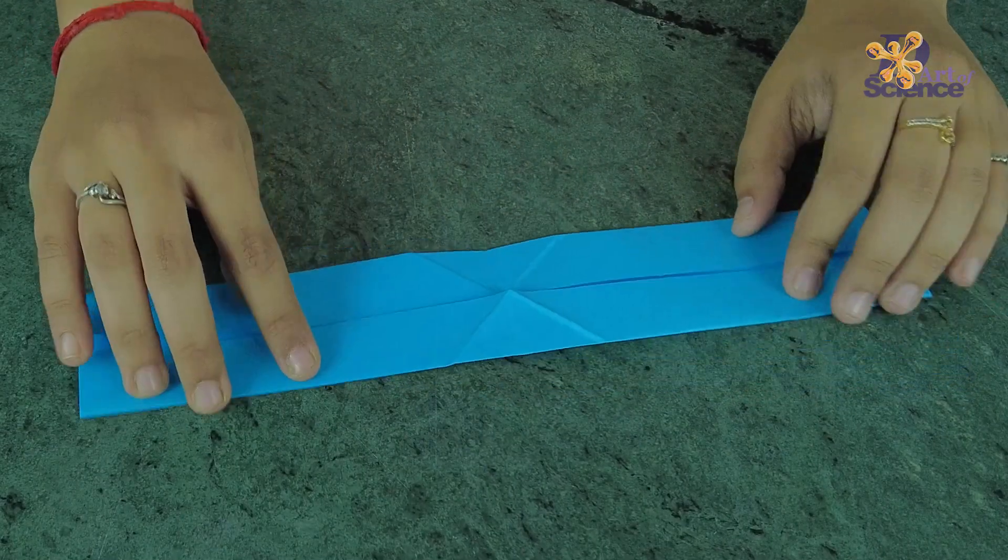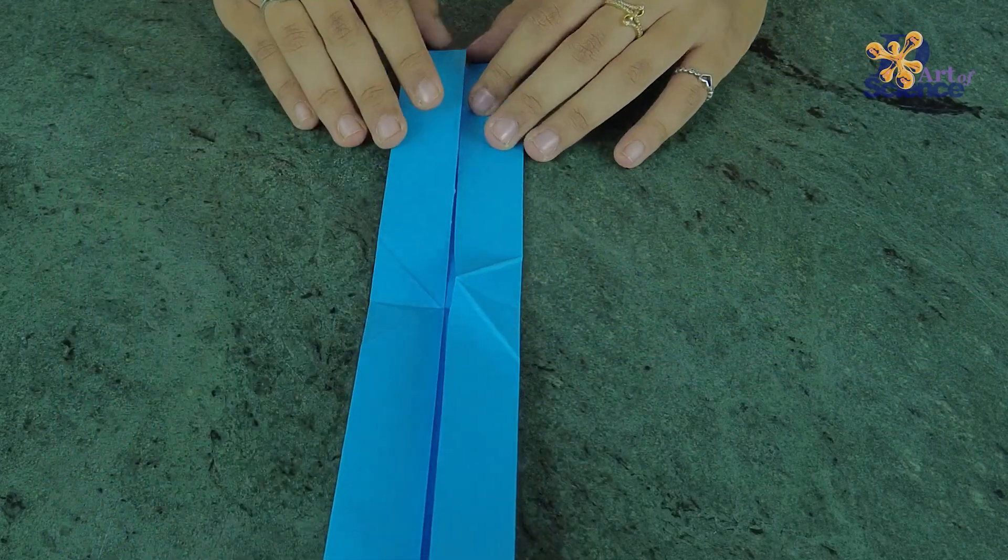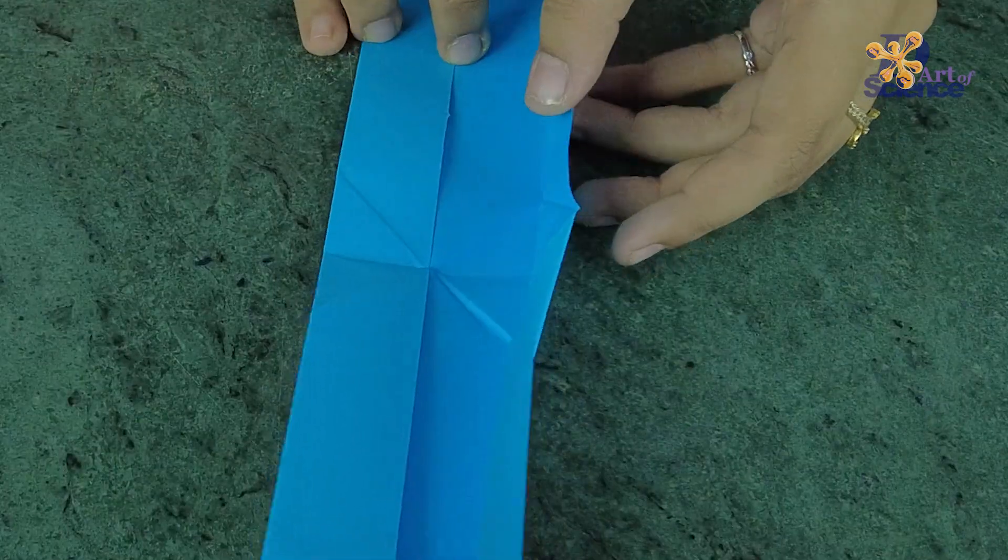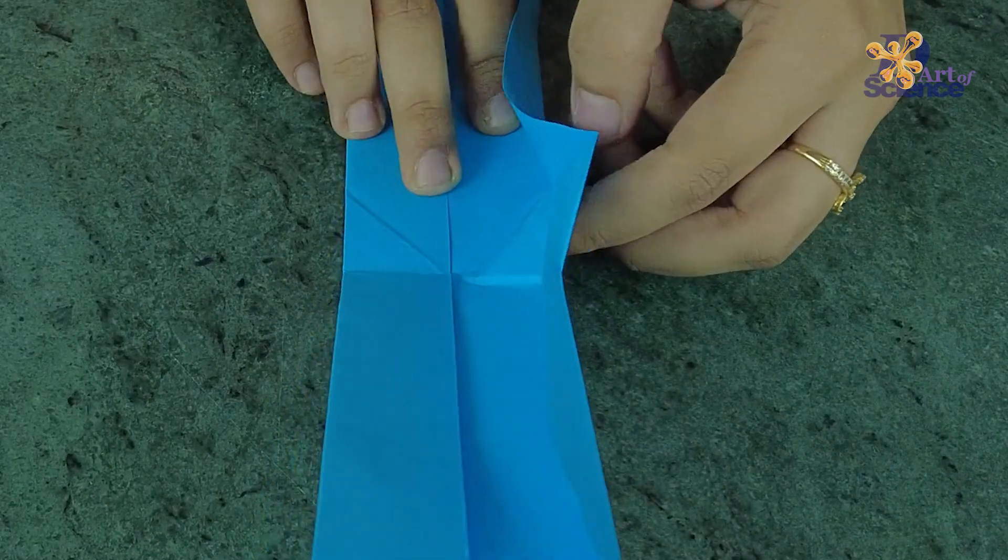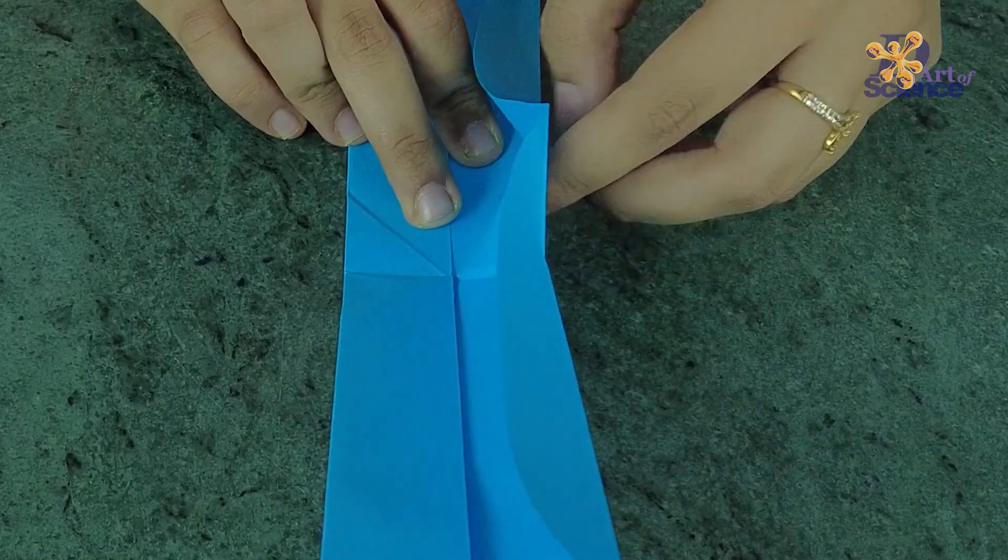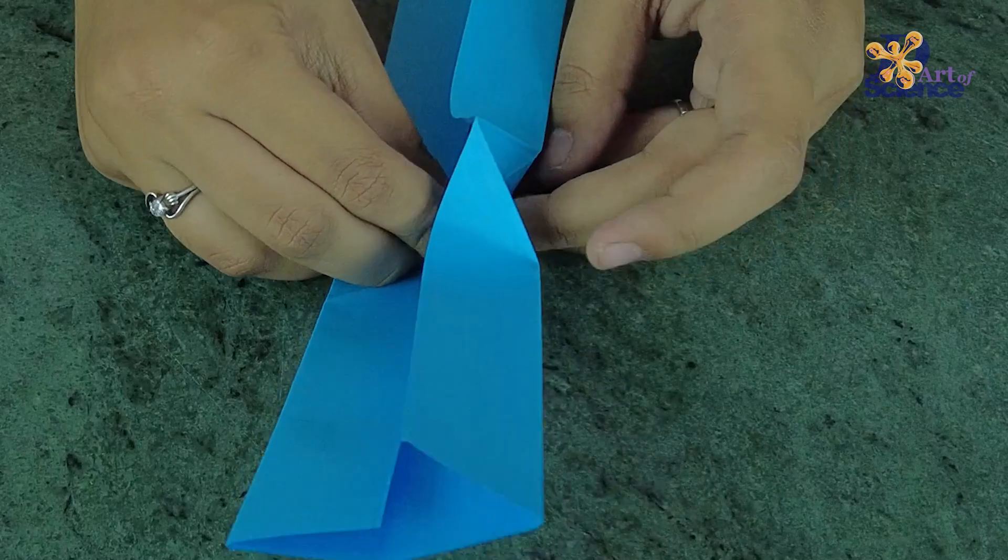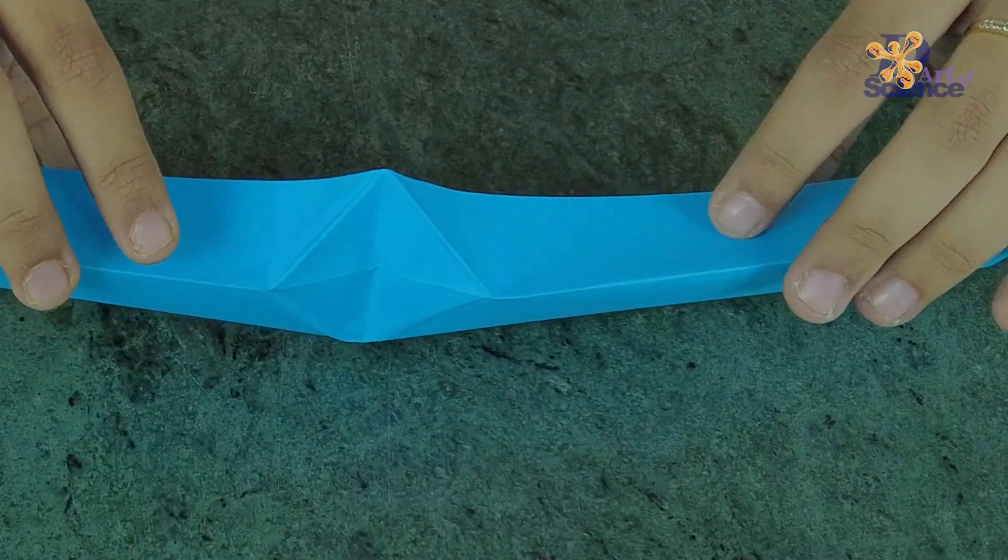Open one of the bigger folds and push the creased diamond from behind till you get a hollow shape, something like this.